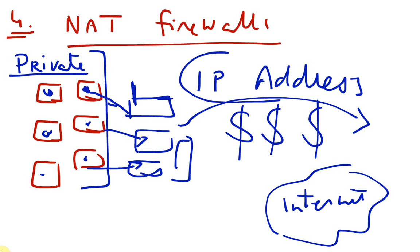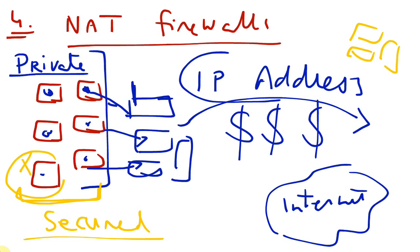So in this case the internal network, the private addresses of the network are secured and the outside person or outside computer may not know the internal IP address or the address of, for example, this PC. So the firewall acts as a bridge.